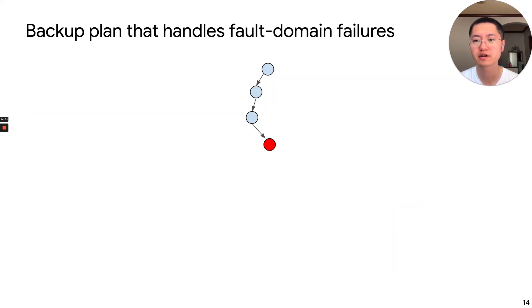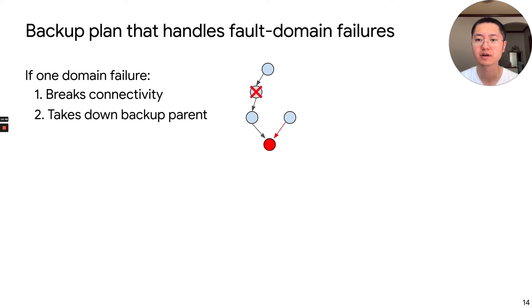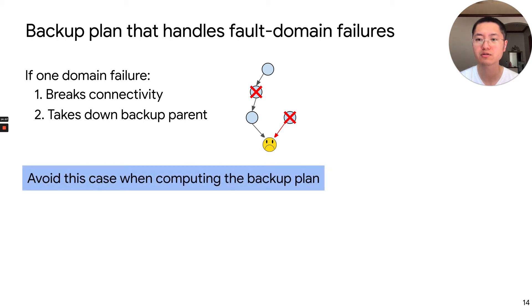Besides the root failure, we also handle the fault domain failures. This is special because one domain failure may break the connectivity of a node, so the node will turn to its backup parent. But if the same domain also takes down the backup parent, then it cannot recover from the failure. So in the calculation, we also have to avoid this case for every node.